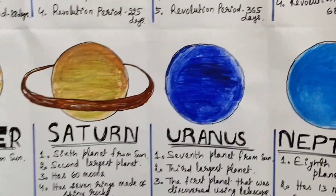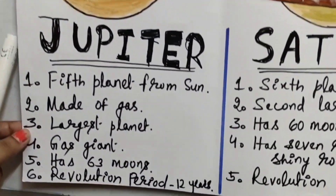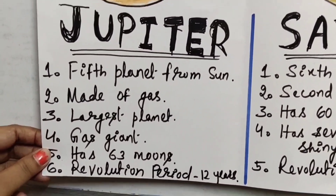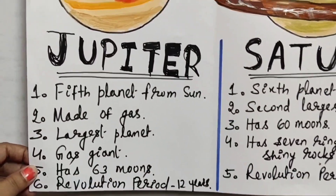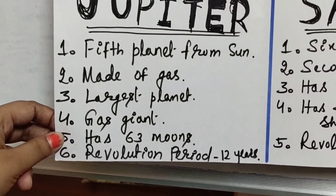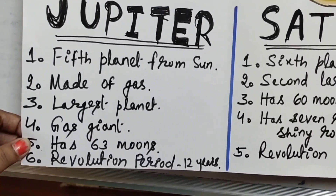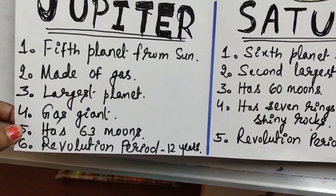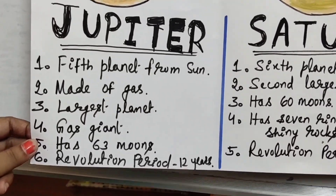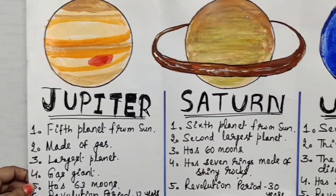Next we are going to Jupiter. Jupiter is the fifth planet from the sun. It is made of gas — it is the largest planet, a gas giant because it is fully made up of gas. It has 63 moons, and its revolution period is 12 years. It takes 12 years to revolve only once around the sun.